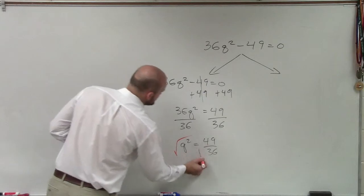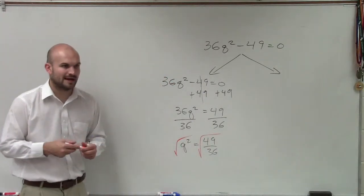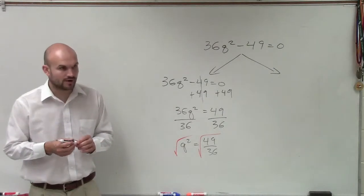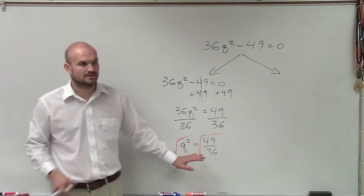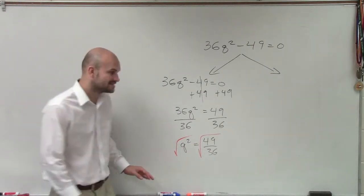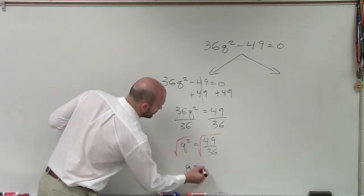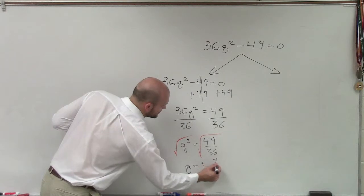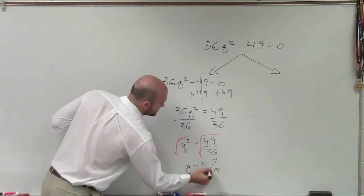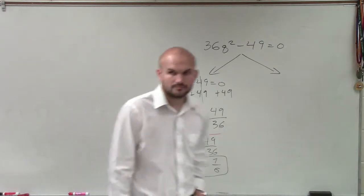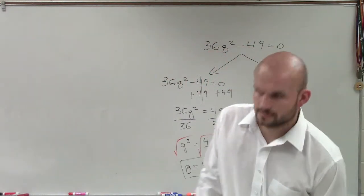And remember, when we introduce the square root, J.D., do you remember what we have? When we introduce the square root, what do we need to make sure we take into account? The positive and the negative value. So q is going to equal plus or minus 7 over 6. Alright? Awesome. Good.